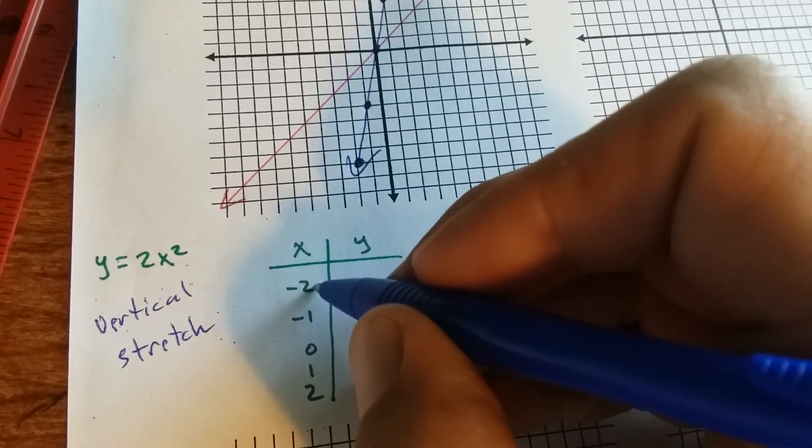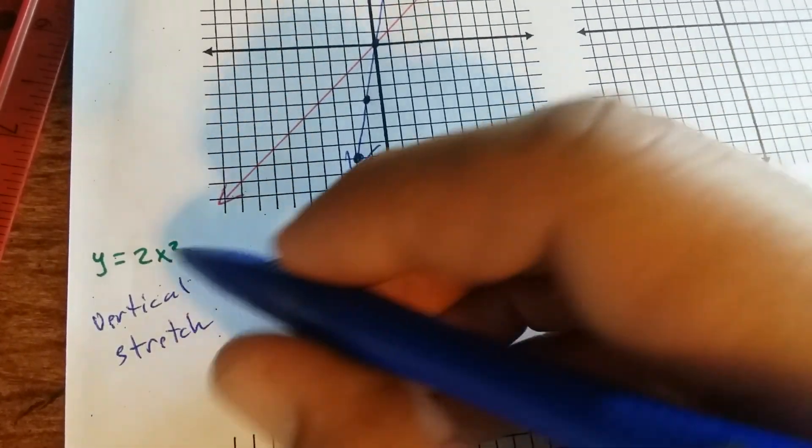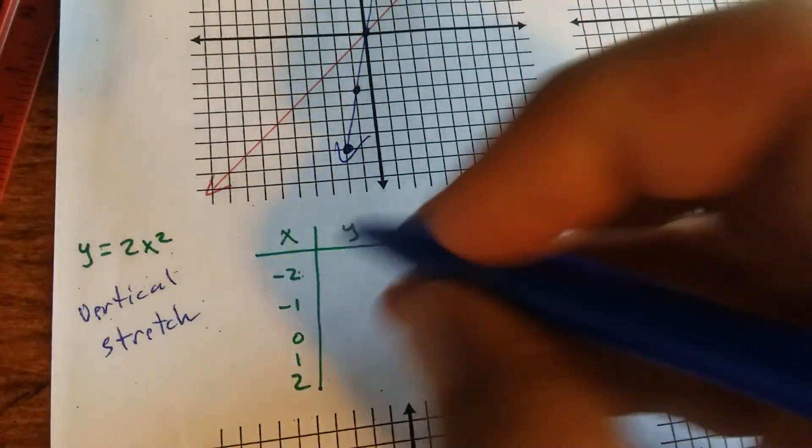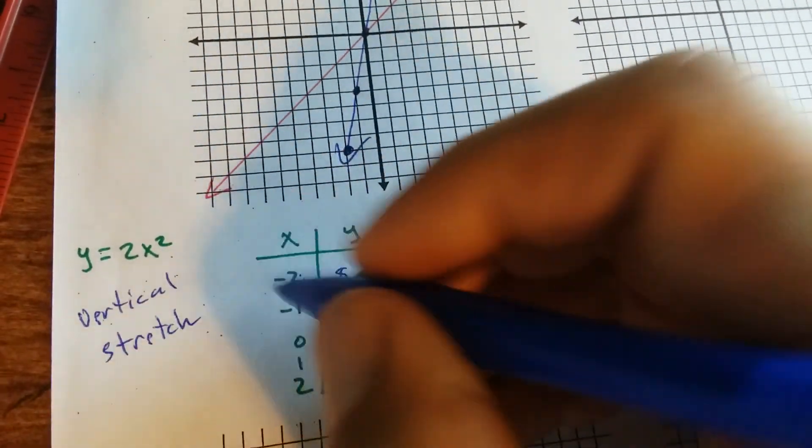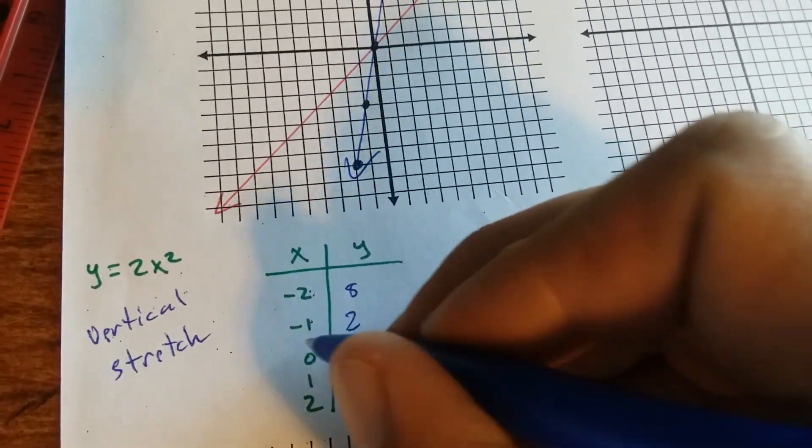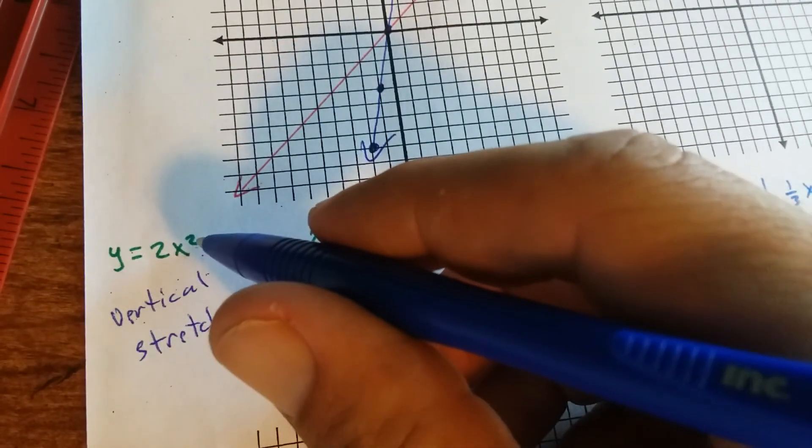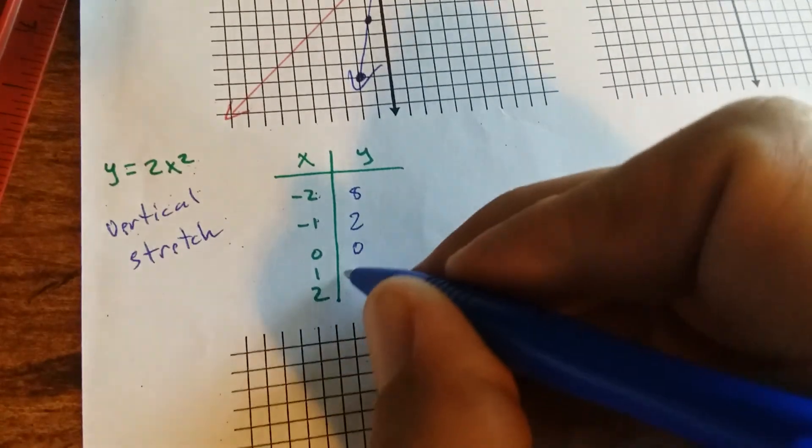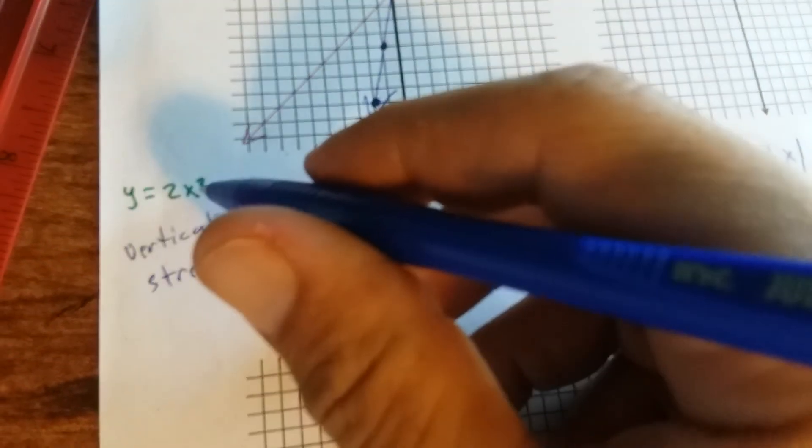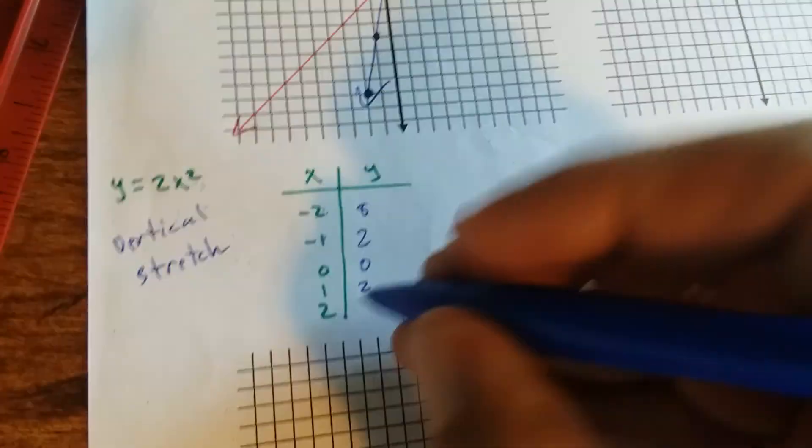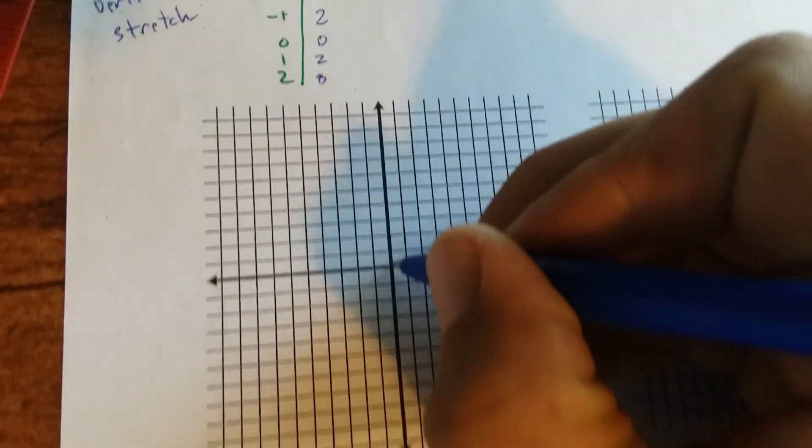So 2x squared. So if x is negative 2, it's going to be 4 times 2 is 8. It's going to be 1 times 2 is 2. 0 times 2 is 0. 1 squared is 1. 2 times 1 is 2. And then 2 squared is 4. 4 times 2 is 8.